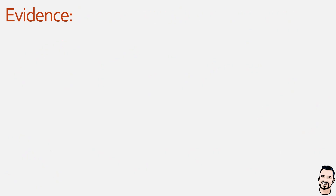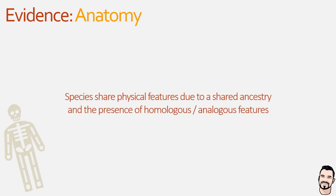Our next piece of evidence is based on the anatomy of different species and how some species share physical features as a result of shared ancestry. These anatomical features or structures can be either homologous or analogous. Homologous features are anatomical features that appear similar in different organisms because they were inherited from a common ancestor. They will have the same basic pattern, however they may or may not share the same function.